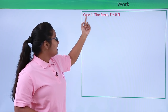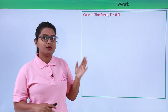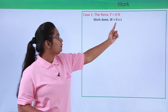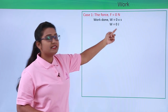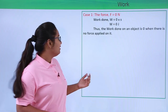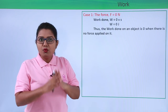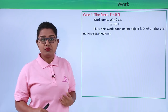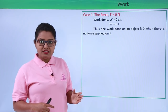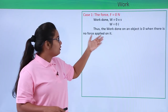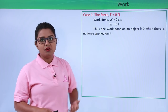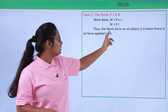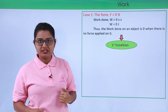For case one, let force be zero — that is, we do not apply any force to a body. Work done = F × S = 0 × S = 0. So the work done on an object is zero when there is no force acting on it. This is similar to the first condition of work done from the previous video: there has to be a force applied for the activity to be called work. This verifies the first condition.